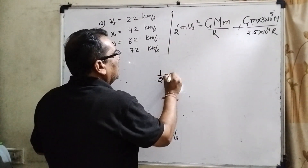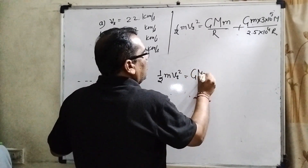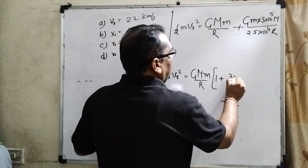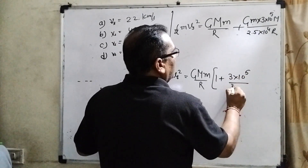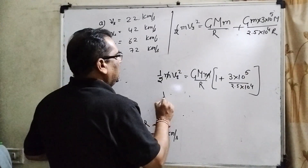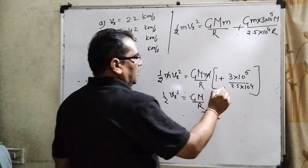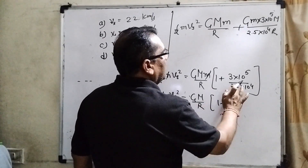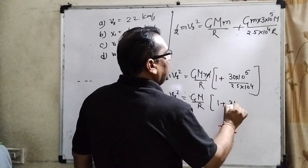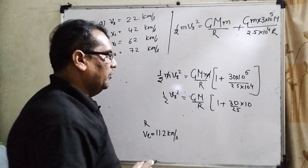So: ½ m Vs² = G·M·m/R · [1 + (3 × 10⁵) / (2.5 × 10⁴)]. You can see that G·M·m/R is a common factor. Small m cancels out, giving: ½ Vs² = GM/R · [1 + 30/25 × 10] = GM/R · [1 + 12] = 13 GM/R. Wait — simplifying 3 × 10⁵ / (2.5 × 10⁴): removing the decimal gives 30/2.5 × 10, which equals 12. So the bracket becomes 1 + 12 = 13... giving GM/R factor times the bracket.